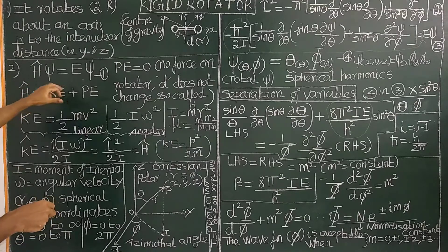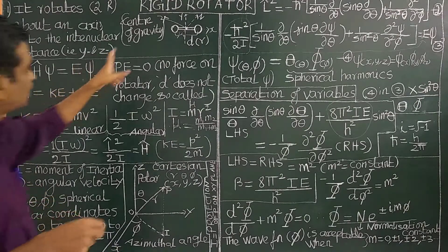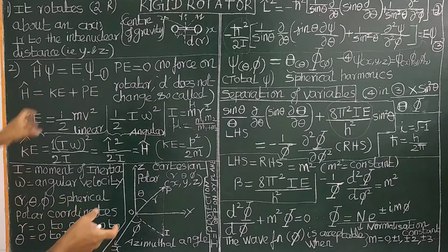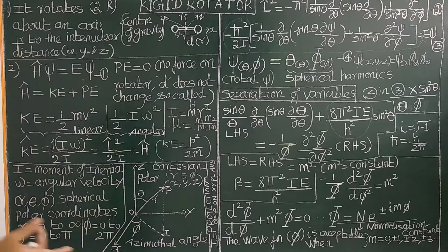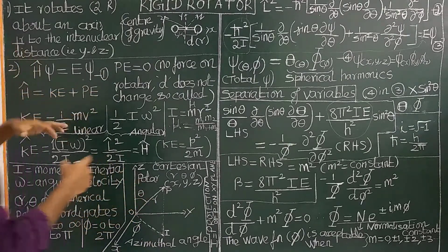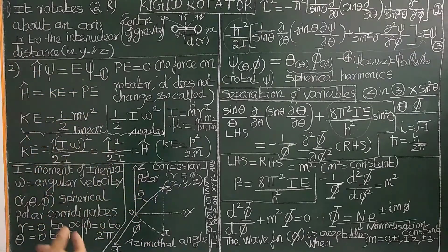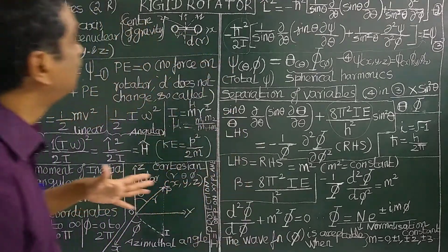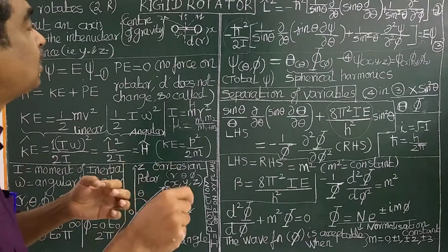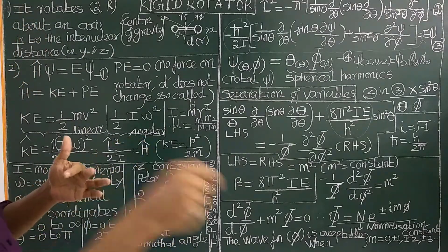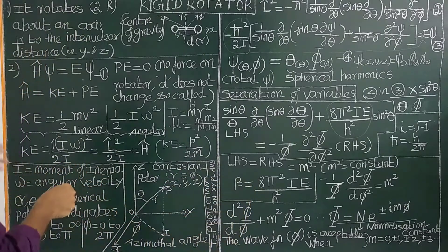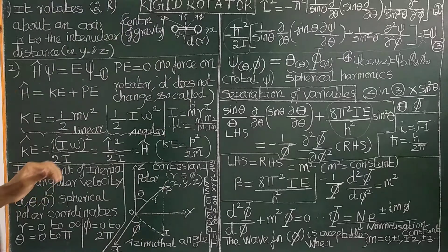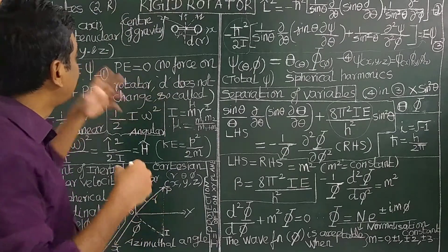H-cap is the total energy operator, psi is the wave function describing the rigid rotator molecule, and E is the energy obtained by solving this equation. The energy levels are rotational energy levels — this is the basis of the rotational spectrum. It occurs in the microwave region of the spectrum, and is therefore called microwave spectroscopy or rotational spectroscopy.